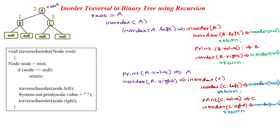Hi, welcome to inorder tree traversal example. Here I have taken a simple tree. The tree has three nodes: A, B, and C.